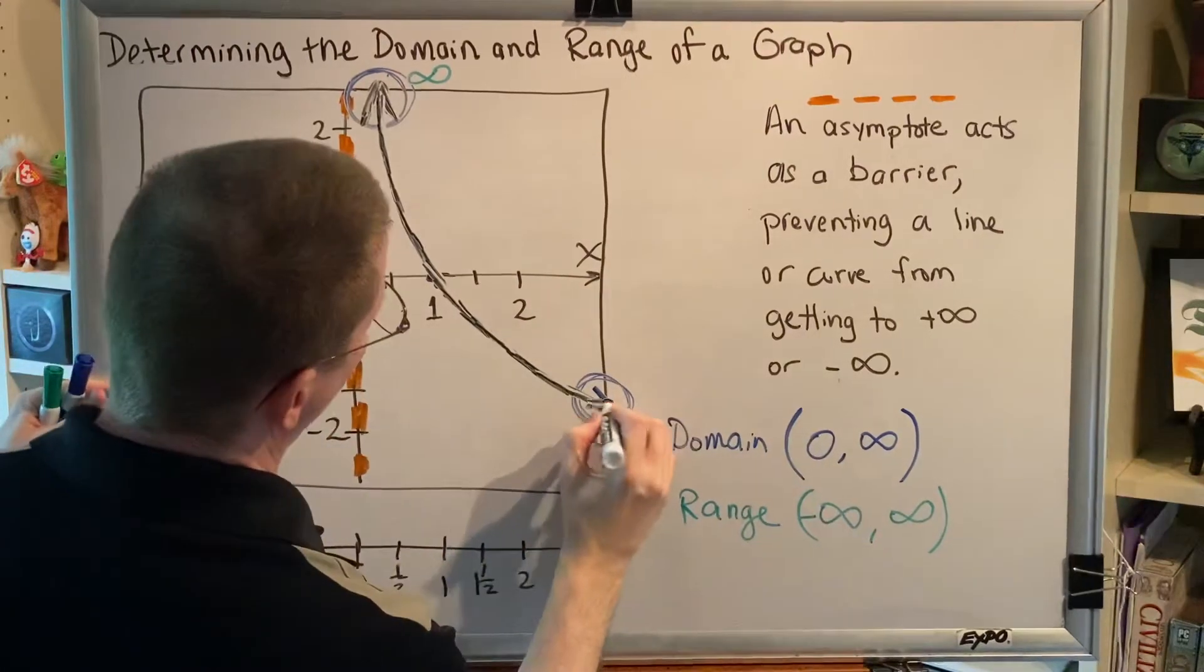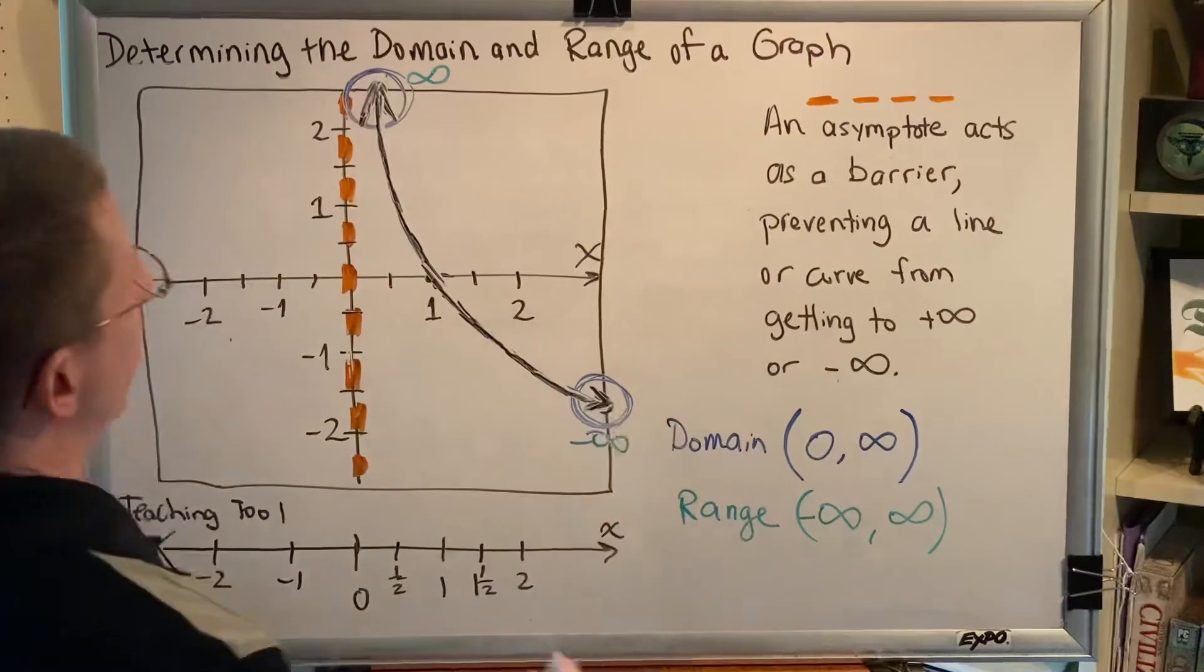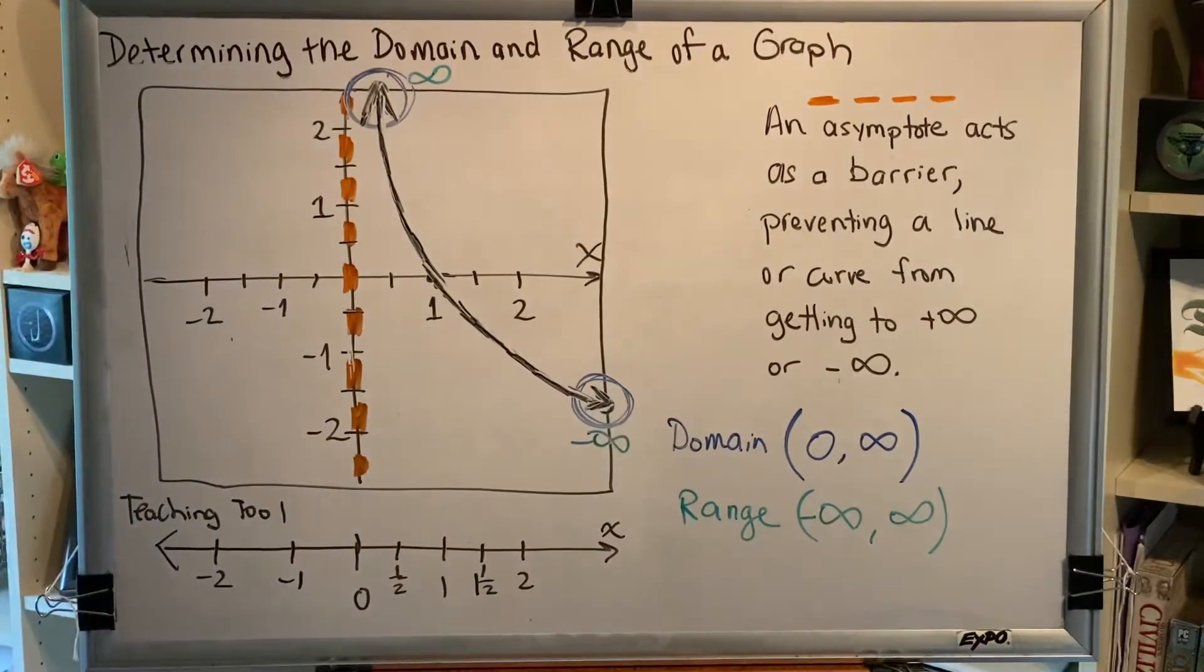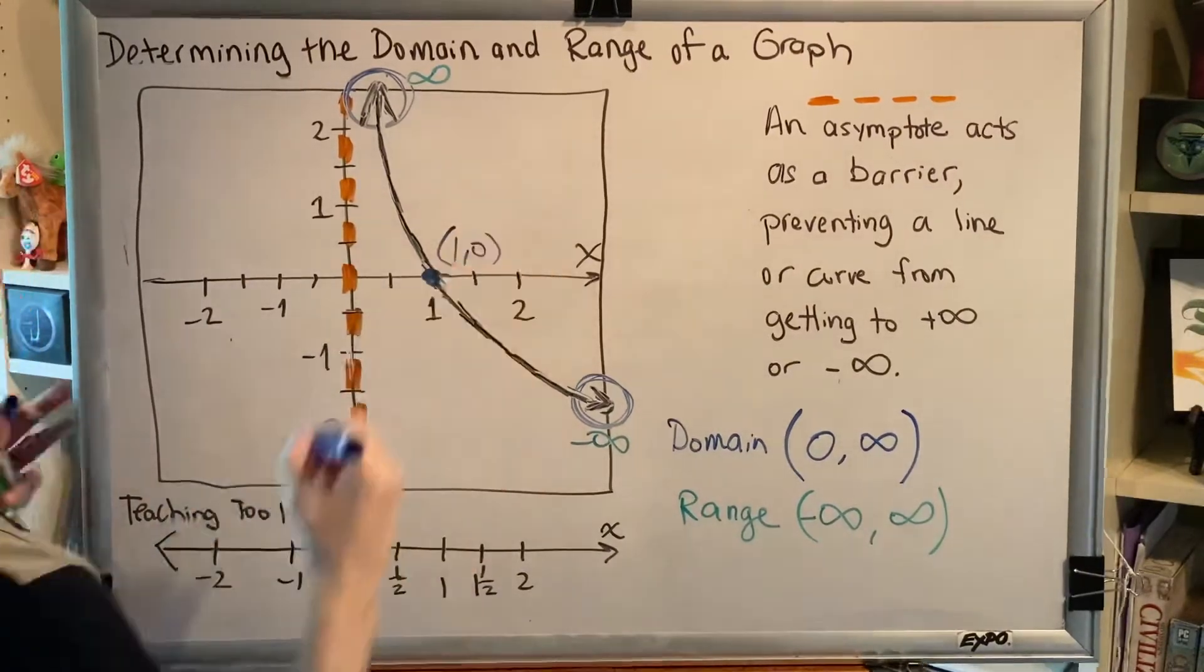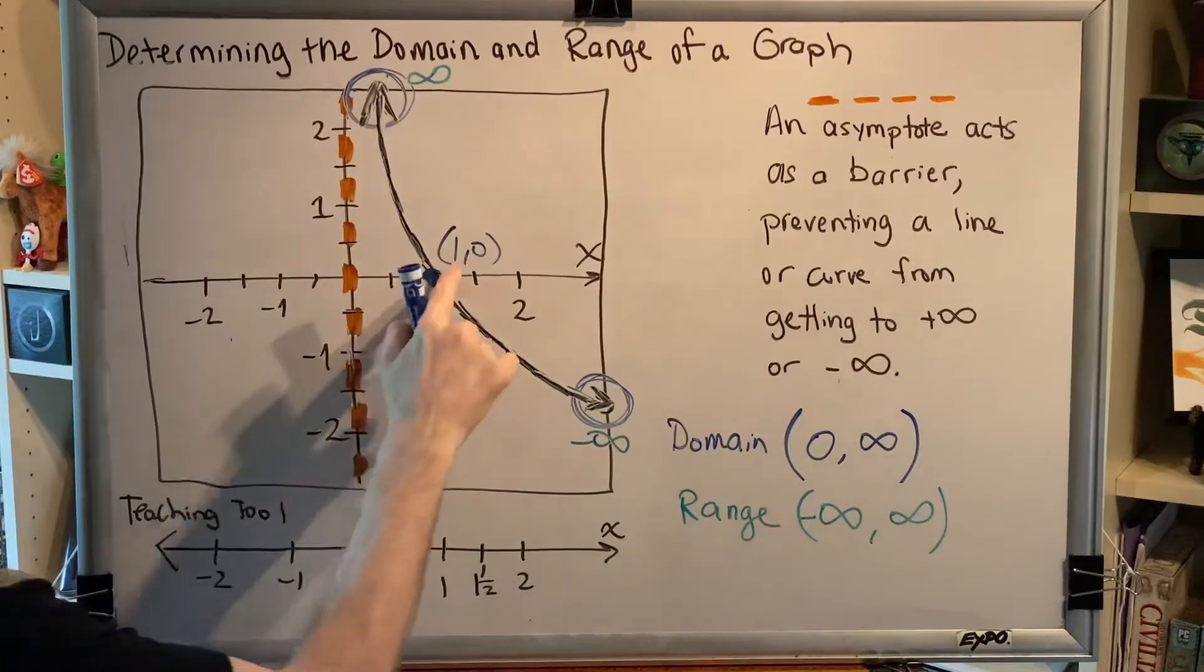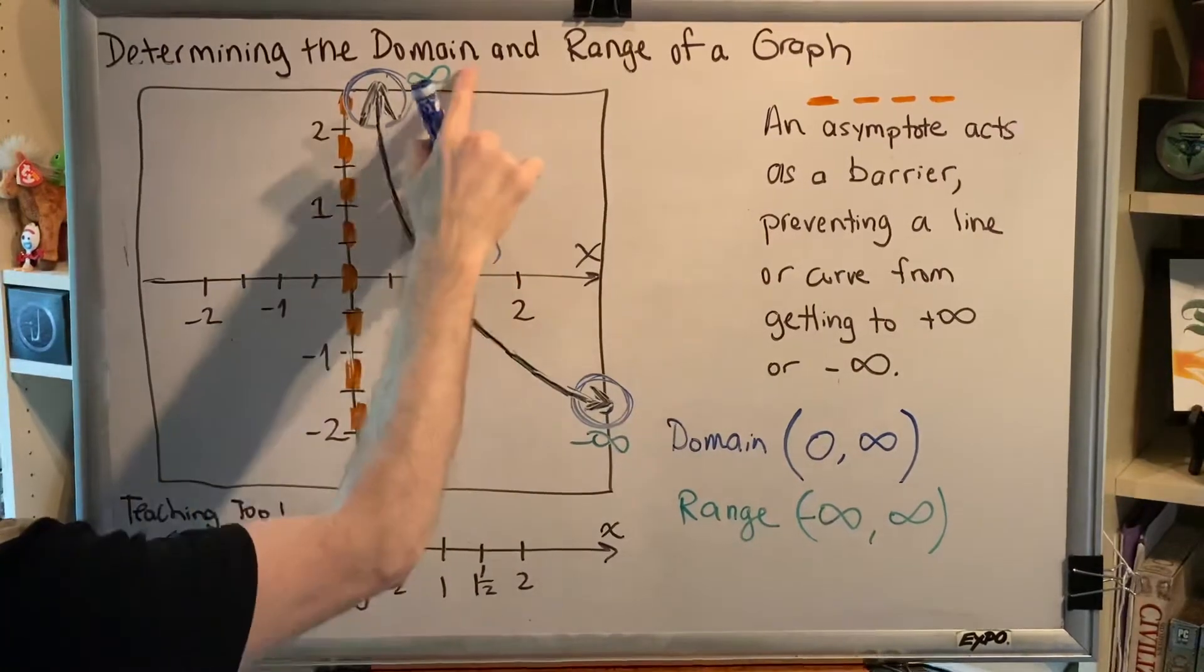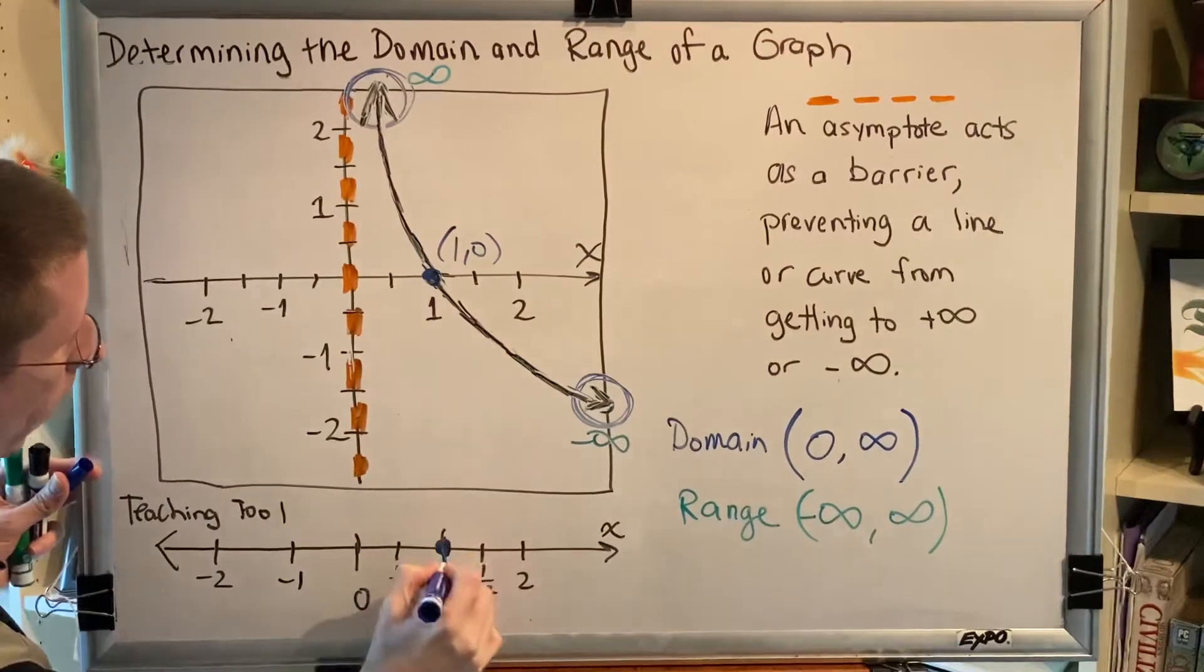What that means is if I pick a point on top of my black curve, all I have to do is determine its x coordinate and then add it to my domain. So let's go ahead and do that right now. Let's pick a point. Let's pick this one. This is the point one comma zero, so it has an x coordinate of one. Therefore one belongs in the domain, and I will graph that visually by putting a dot at one on my number line.